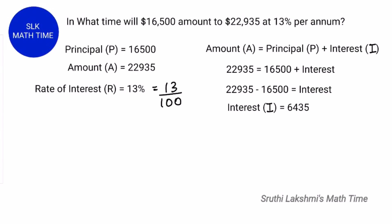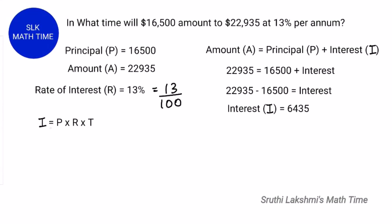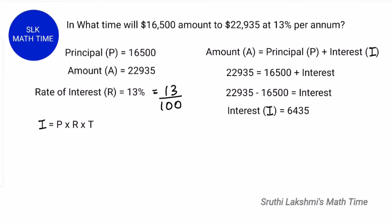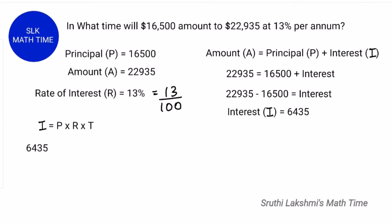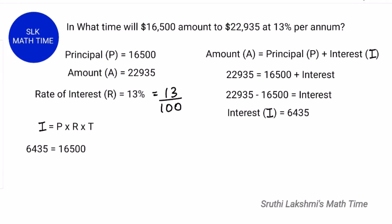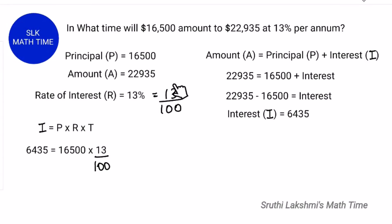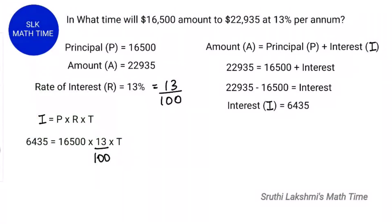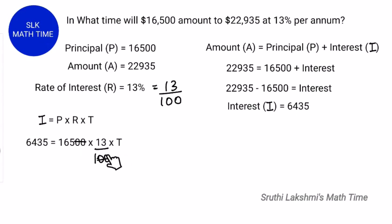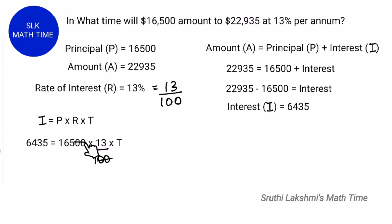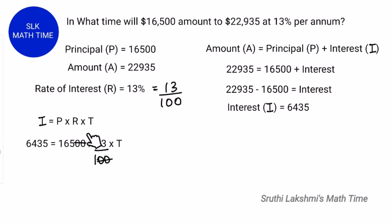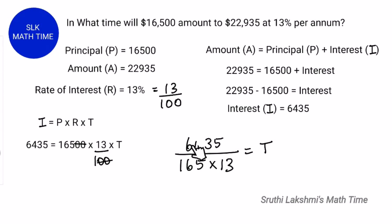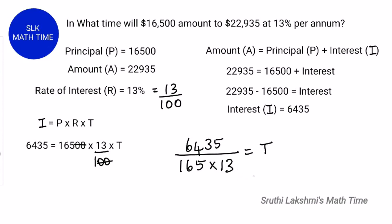Now since we know the interest, the principal, and the rate of interest, we can easily find the time using the formula: interest = principal into rate of interest into time. Let's substitute: interest is $6435, principal is $16500, rate of interest is 13 by 100, and we need to find T. Let's cross out the two zeros. So 165 into 13 is in the numerator; when brought to the other side it becomes the denominator, giving us T = 6435 by (165 into 13).